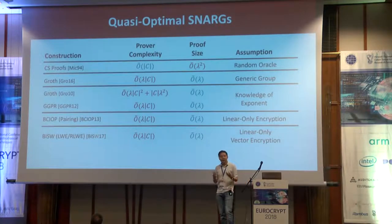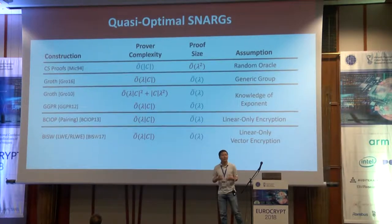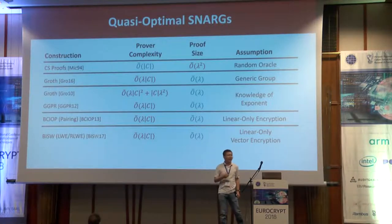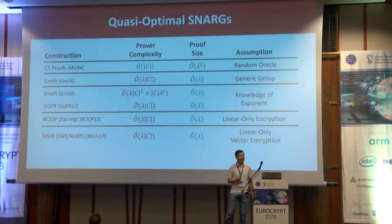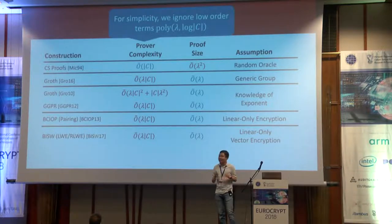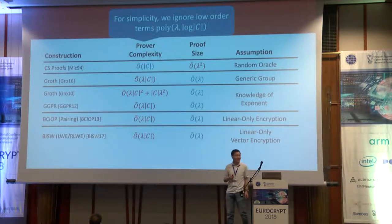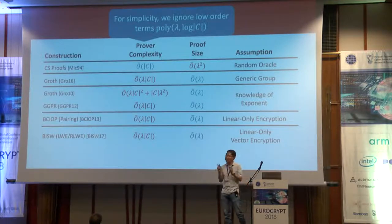Let's look at some existing SNARK candidates. First, we have CS proofs due to Micali, one of the first constructions of a succinct non-interactive argument. With a suitable instantiation of a hash function, CS proofs can give us quasi-optimal prover complexity — the prover complexity scales only quasi-linearly with the circuit size. However, CS proofs do not provide optimal succinctness: to provide λ bits of soundness, the length of a CS proof grows quadratically in the security parameter.